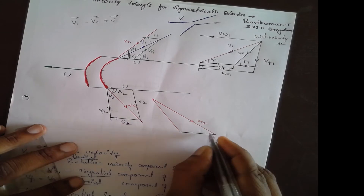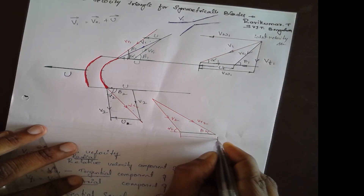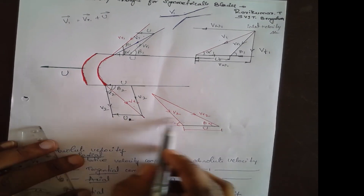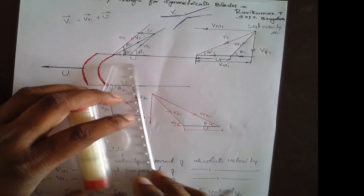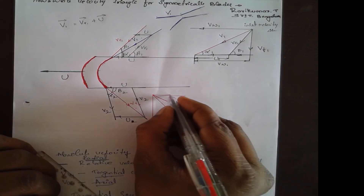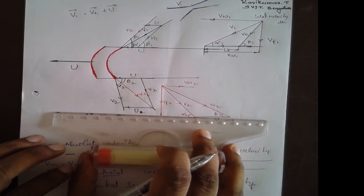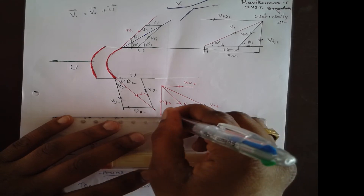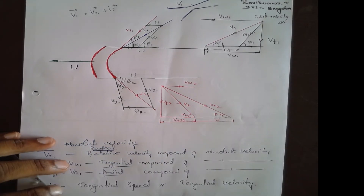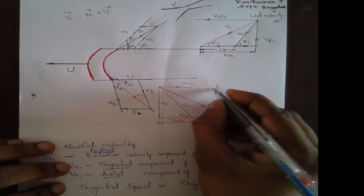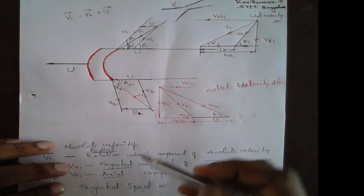Expanding the lower outlet velocity triangle: this is vr2, with angle beta2; this is v2, with angle alpha2; and this is u. Resolving v2 gives a vertical component vf2 and a horizontal component v_omega2. Drawing the parallel line, from here to here you get v_omega2. This completes the outlet velocity triangle.